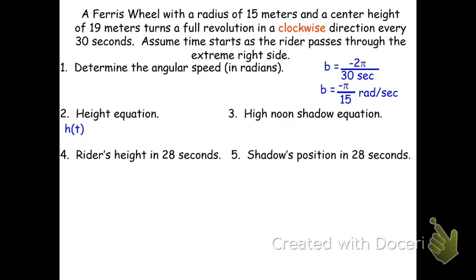The height equation is h(t) = 19 + 15·sin(−π/15 · t). The shadow equation is s(t) = 15·cos(−π/15 · t). Note that cosine is an even function, so cos(−θ) = cos(θ), meaning the shadow equation can also be written as 15·cos(π/15 · t). Sine is an odd function, so sin(−θ) = −sin(θ), meaning the height equation can equivalently be written as 19 − 15·sin(π/15 · t). Either form is correct — if the wheel goes in the opposite direction, just make the angle negative.